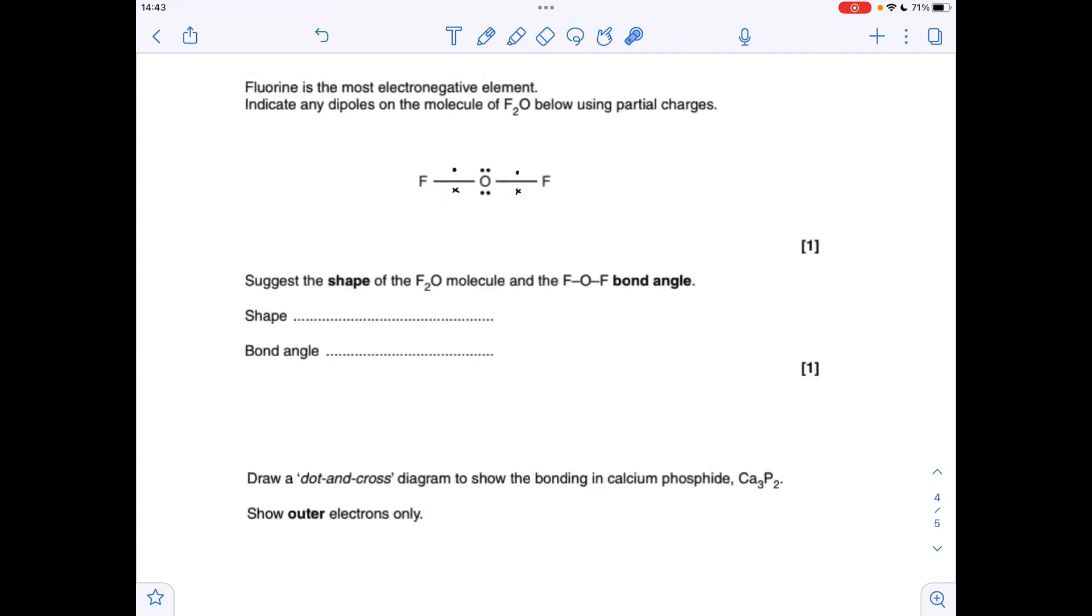Moving on to the last question now, so you'll notice I've added some electrons here. I've got a cross there to represent the electron the fluorine's putting into this single covalent bond of the oxygen. Obviously oxygen matches that with that black circle, likewise for this bond here. So the reason I've done that is you can now clearly see we've got 1, 2, 3, 4 electron regions around that central oxygen.